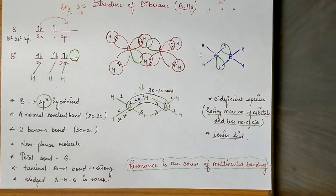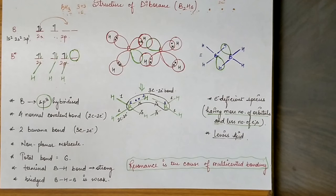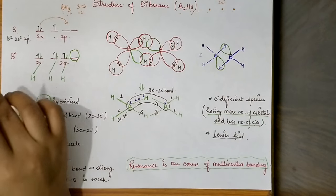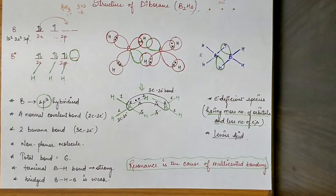This bonding is called multi-centered bonding, and we see it in molecules which are electron deficient. In the case of three centers and two electrons — that is a 3-center 2-electron bond. And how is our boron? It is an electron deficient species.